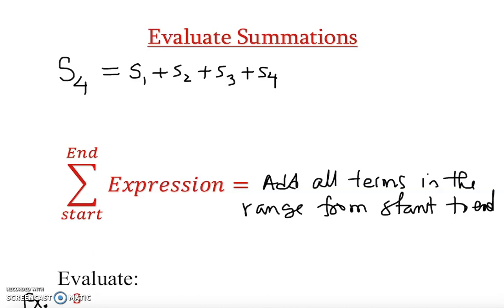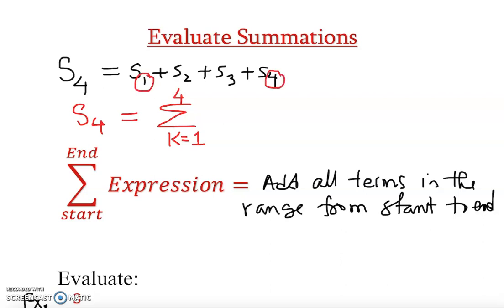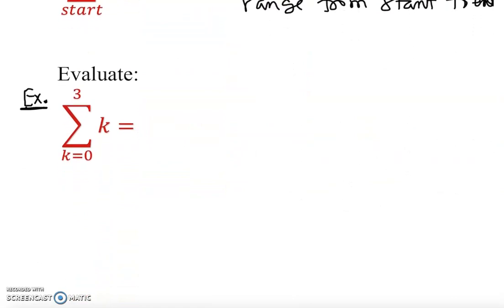So S(4) in summation notation would be written as: sigma with k equal to 1 at the bottom and 4 as the upper limit, of S(k). That means S(1) plus S(2) plus S(3) plus S(4). As you can see, this is basically the same thing as the series definition. Now we are ready to work out some actual problems.